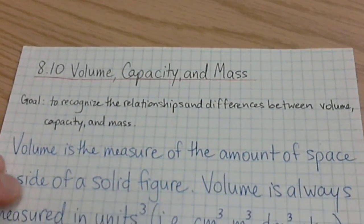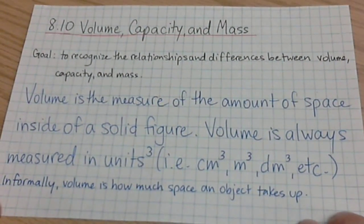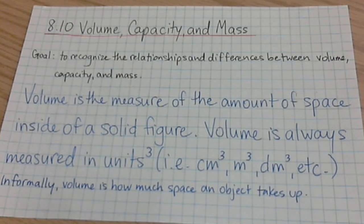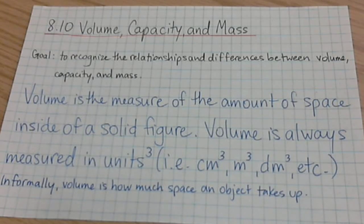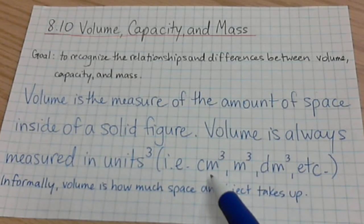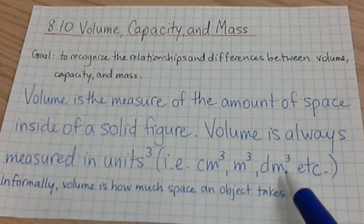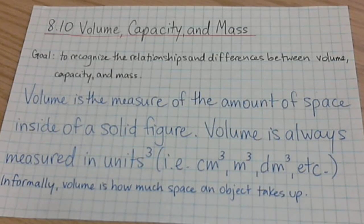Looking at the first definition: volume is the measure of the amount of space inside a solid figure. Informally, volume is how much space an object takes up. It's measured in units cubed — for example, centimeters cubed, meters cubed, decimeters cubed, etc.